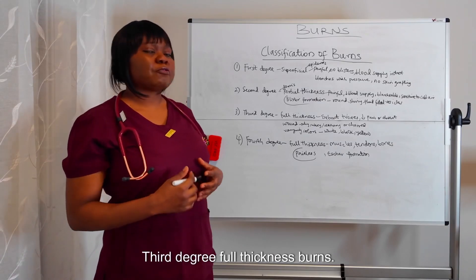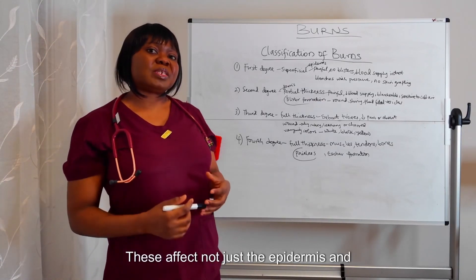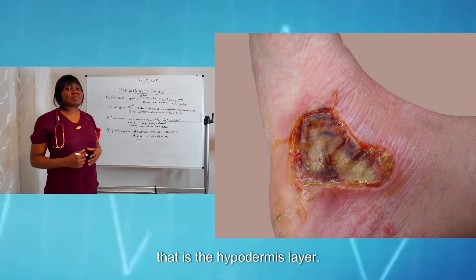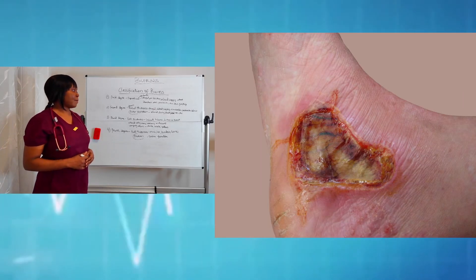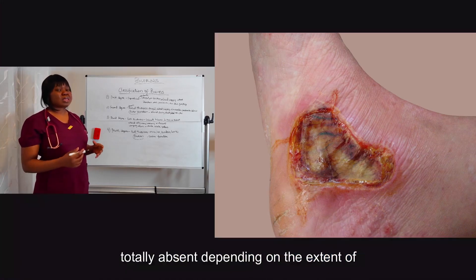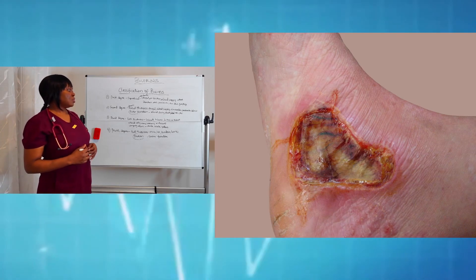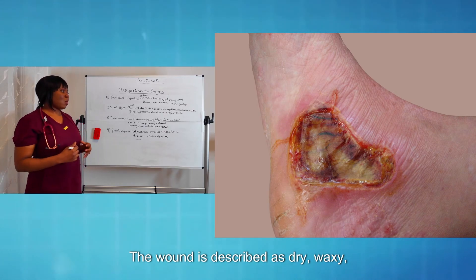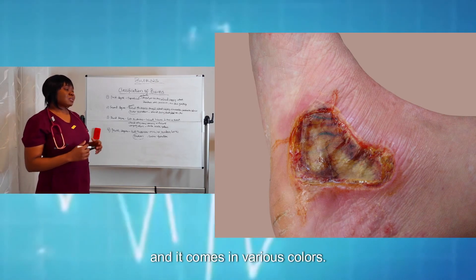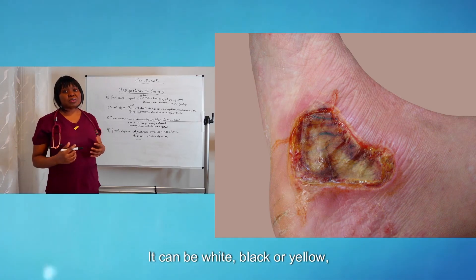Third degree is called full thickness burn. This affects not just the epidermis and dermis but also the subcutaneous tissue — that is the hypodermis layer. Here, the pain may be decreased or even totally absent depending on the extent of injury. The wound is described as dry, waxy, leathery, or charred, and it comes in various colors — it can be white, black, or yellow.